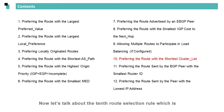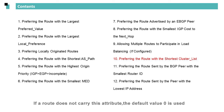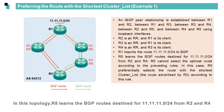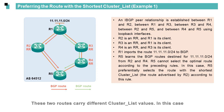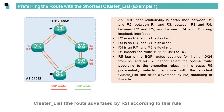Now, let's talk about the 10th route selection rule, which is to preferentially select the route with the shortest cluster list. If a route does not carry this attribute, the default value 0 is used. In this topology, R5 learns the BGP routes destined for 1.1.1.0/24 from R2 and R4. These two routes carry different cluster list values. In this case, R5 preferentially selects the route with the shortest cluster list — the route advertised by R2 — according to this rule.